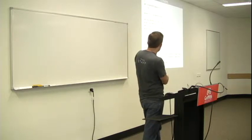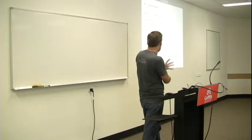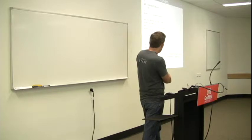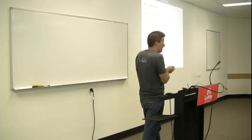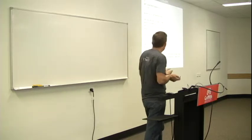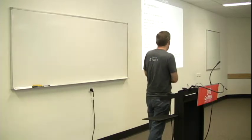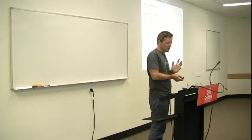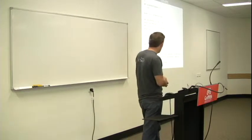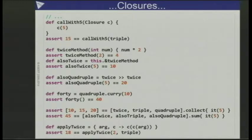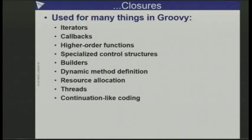I've got an 'apply twice' function or closure here. It takes an argument and some closure, calls closure on that argument, and then calls closure on the result of that. That's just a higher-order function. If you hear that term, it's nothing magical — it's just allowing functions to have functions as parameters. It turns out to be a very powerful feature.